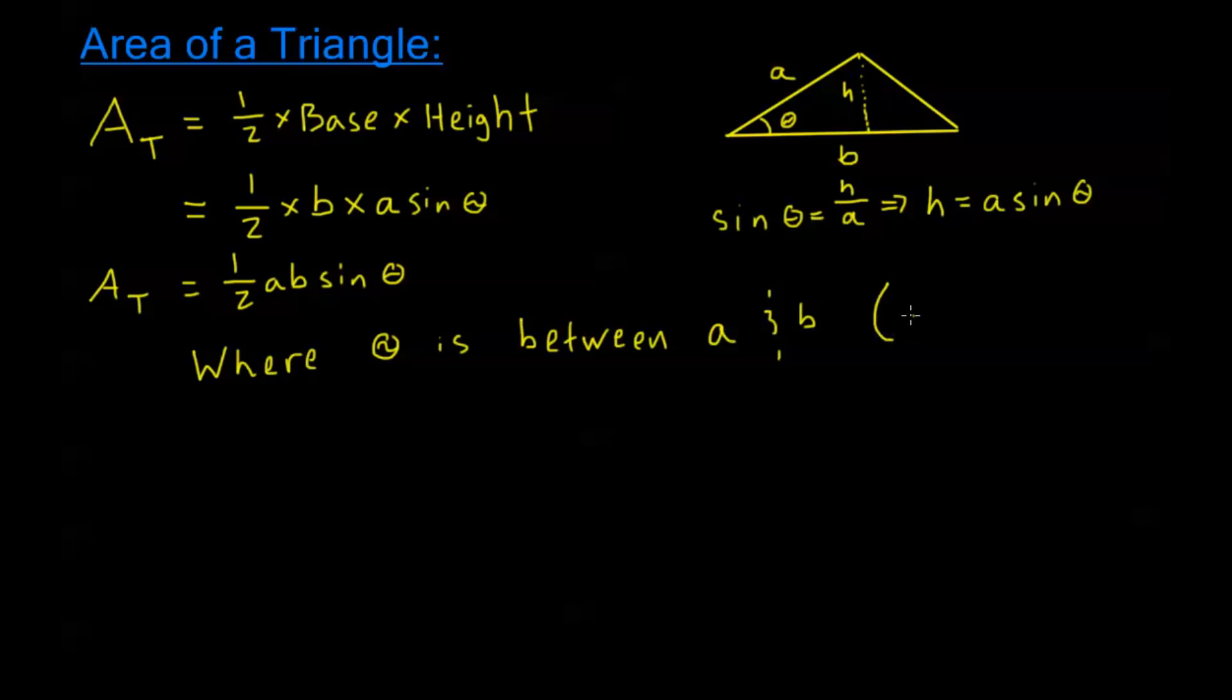Or in other words, I could write with our convention for labeling a triangle theta equals capital C. Remember in a triangle, little a, the side little a is opposite angle big A. Side little b is opposite angle big B. So this would be angle big C.